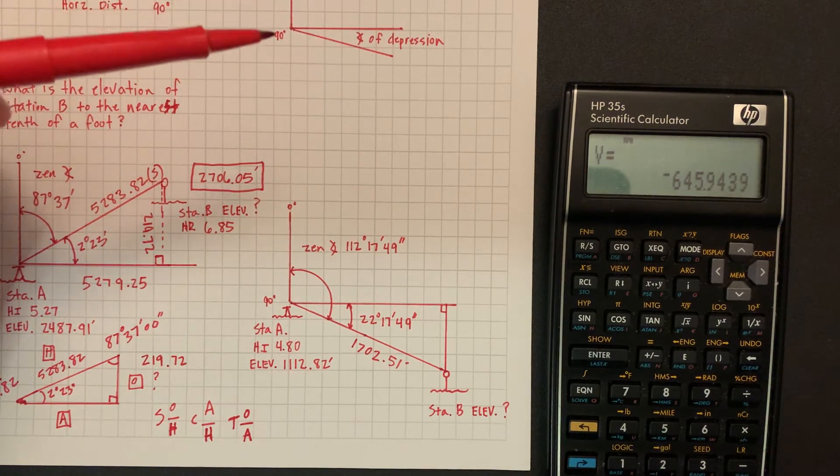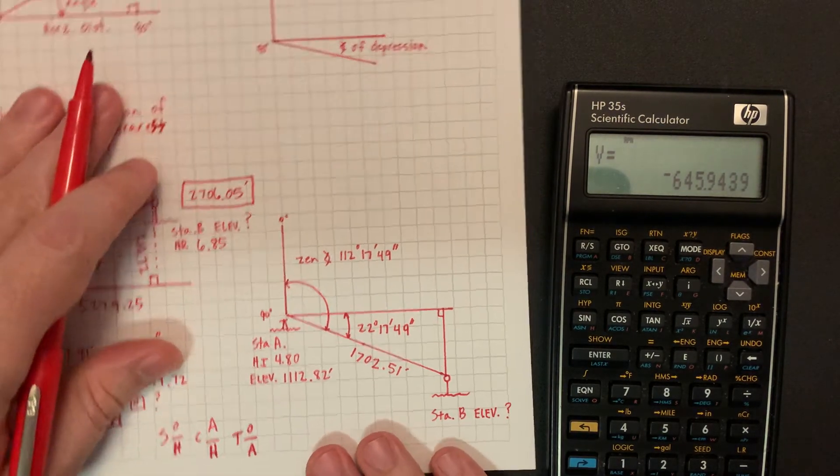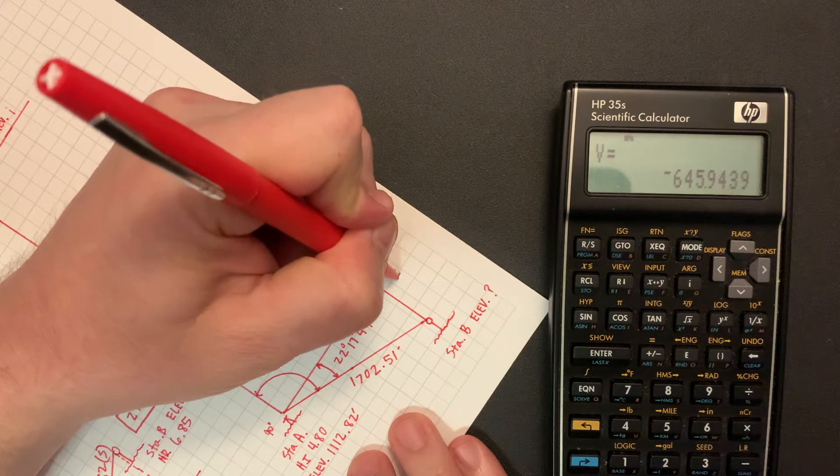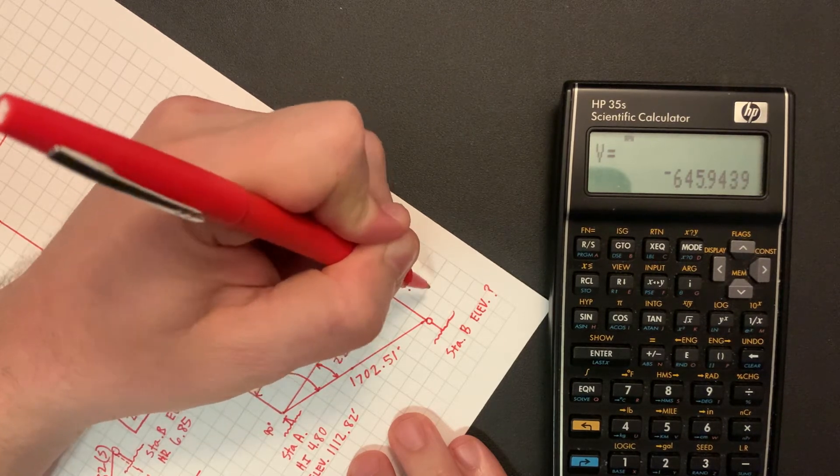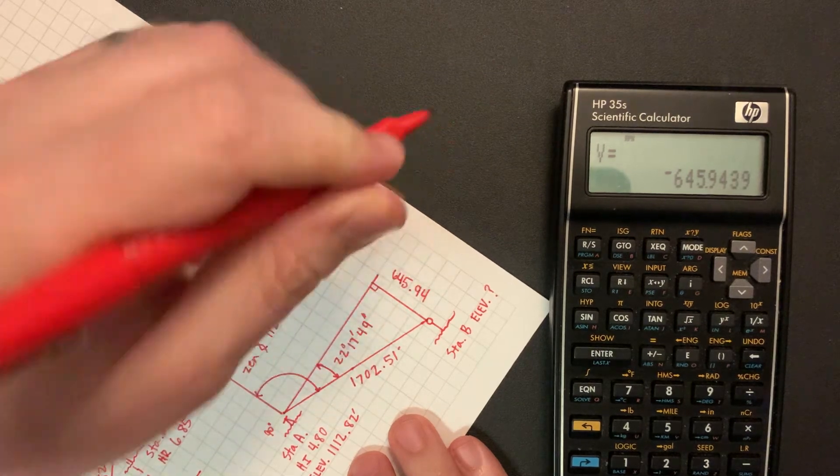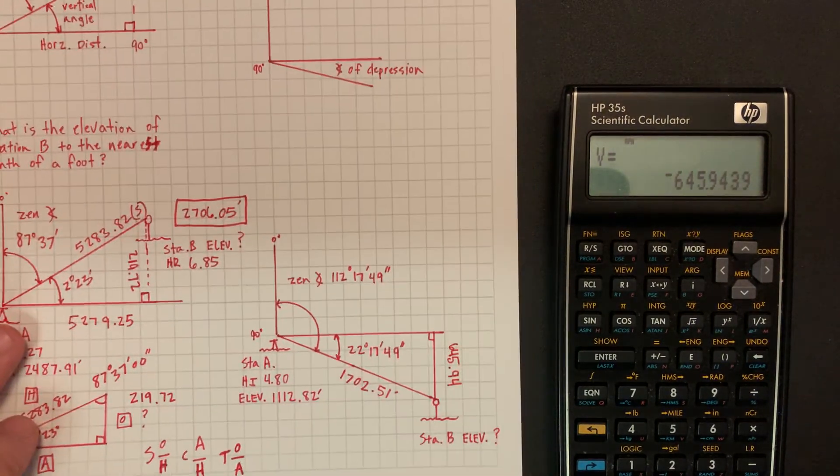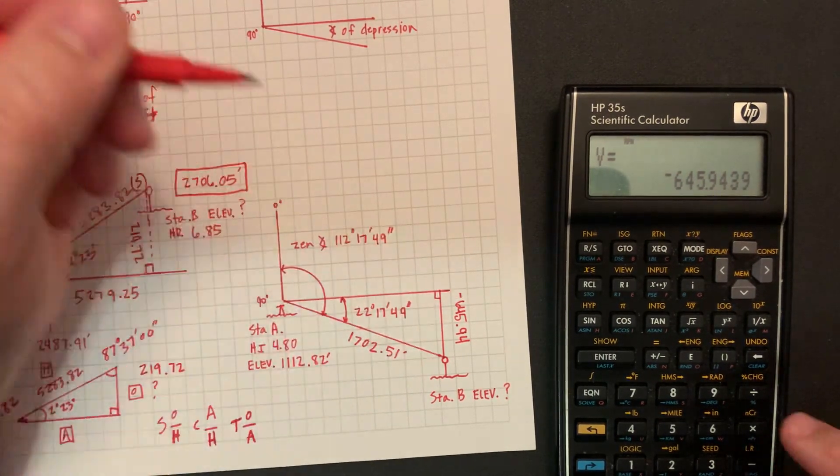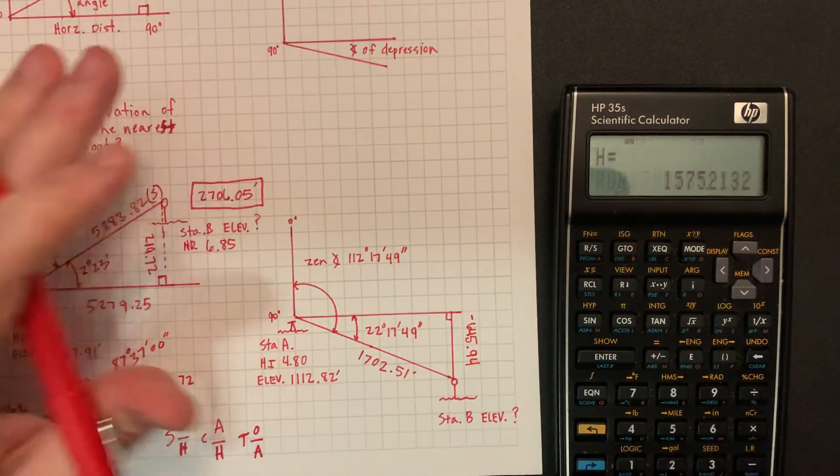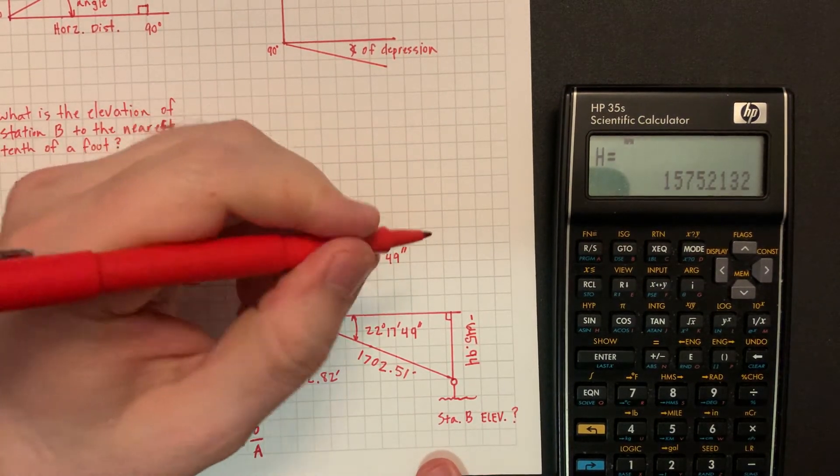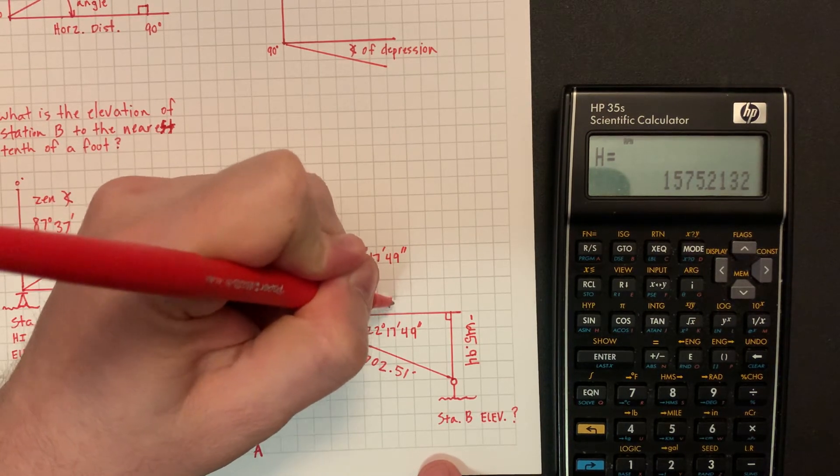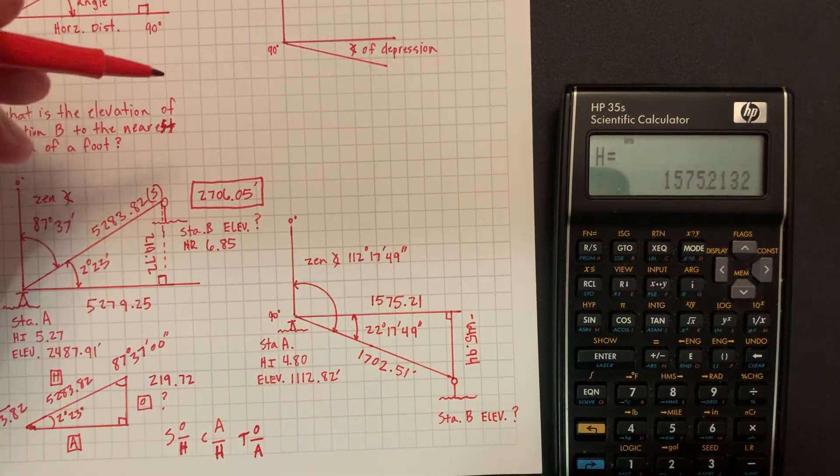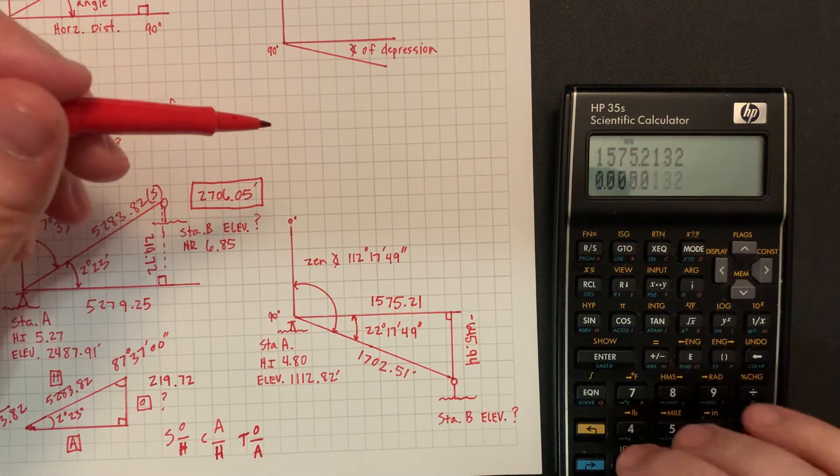And so we are negative vertical, so we're going down 645.94, and you can put a negative down there if you want. And hit RS and we'll have 1575.21. Okay, that looks about right, doesn't it? So you saw how long it took the first problem.